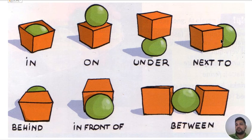Where is the bowl in this picture? The bowl is under the box. Where is the bowl in this picture? In this picture, the bowl is next to, next to the box. Where is the bowl? The bowl is behind the box. Where is the bowl in this picture? This picture is in front of. The bowl is in front of the box. In this picture, where is the bowl? The bowl is between the boxes.